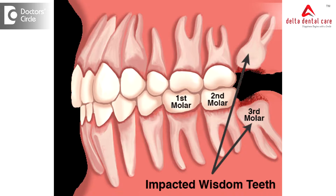Impacted teeth are those which have no place to erupt and are said to be impacted or embedded inside the bone. They may be either completely impacted in the jaw, or partially erupted or partially embedded inside the bone.